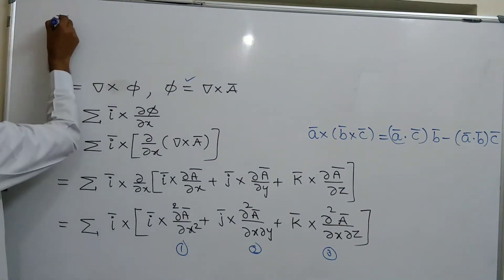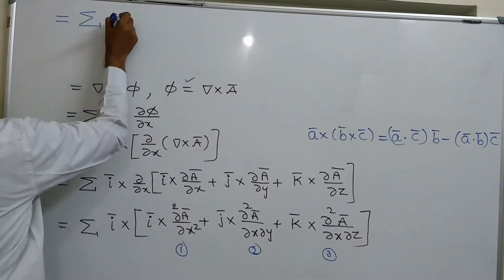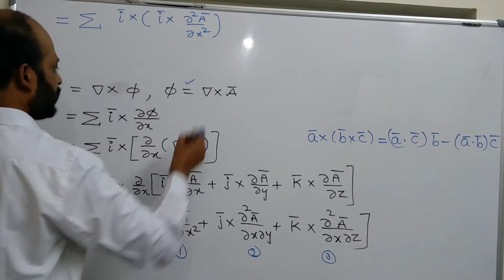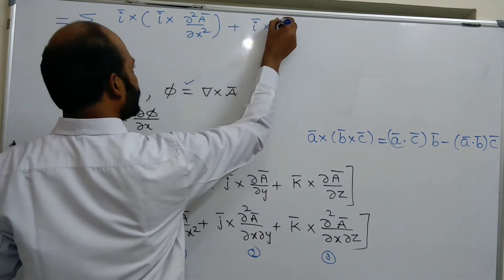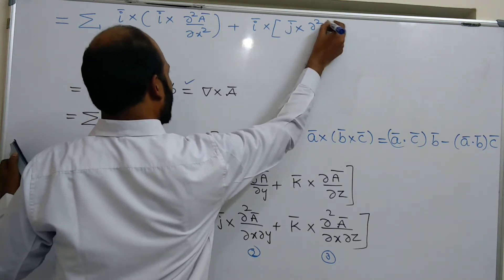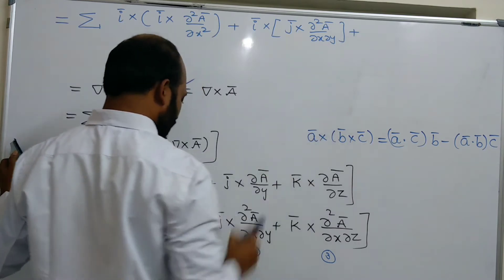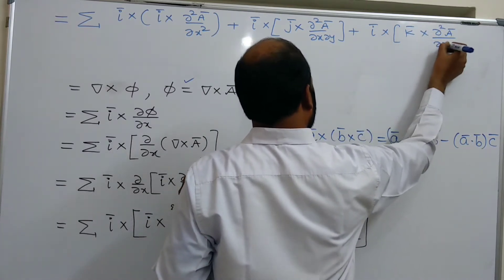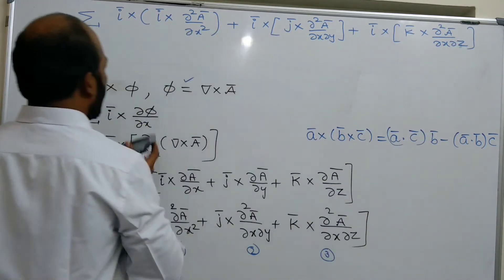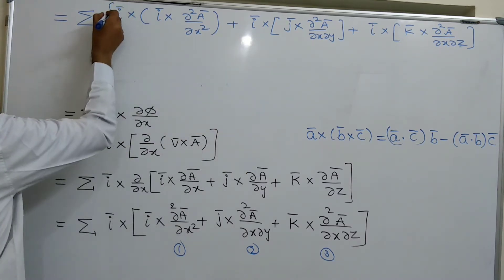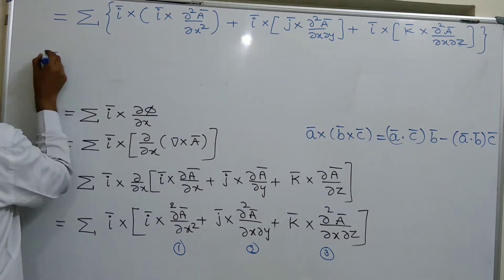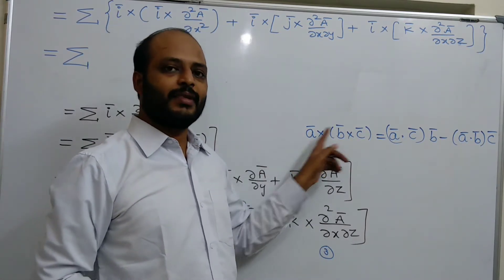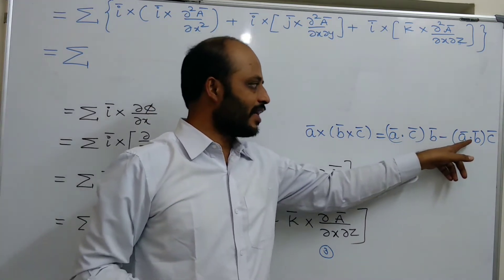This equals summation of: i-bar cross (i-bar cross dou squared A-bar by dou x squared), plus i-bar cross (j-bar cross dou squared A-bar by dou x dou y), plus i-bar cross (k-bar cross dou squared A-bar by dou x dou z). Now observe the vector triple product formula from the previous class: A-bar cross (B-bar cross C-bar) = (A-bar dot C-bar) B-bar minus (A-bar dot B-bar) C-bar.